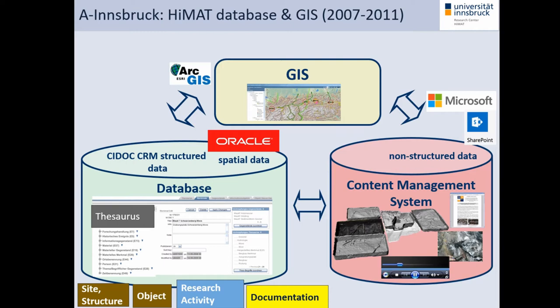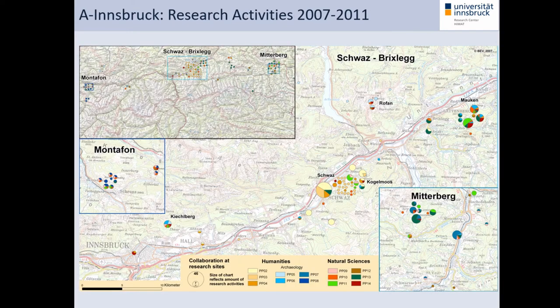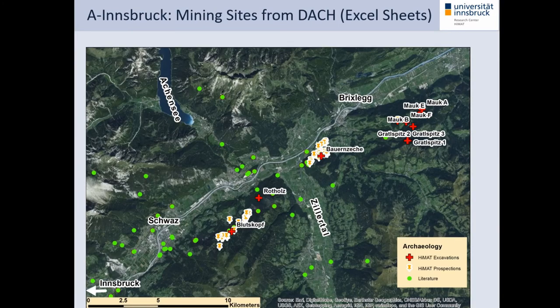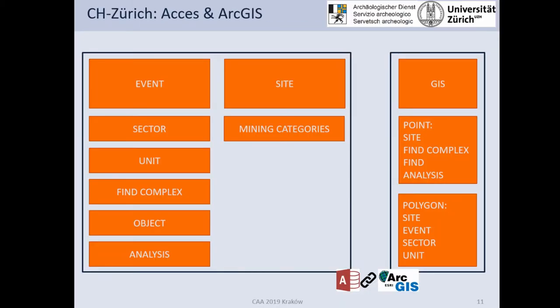With this database, which was used until 2011, we displayed the research activities in the areas that were researched, showing how the humanities and natural sciences collaborated at different research sites. In this DACH project where we now integrate the data, that database was no longer used, so we had a different representation — just Excel sheets were used to document the sites and finds.